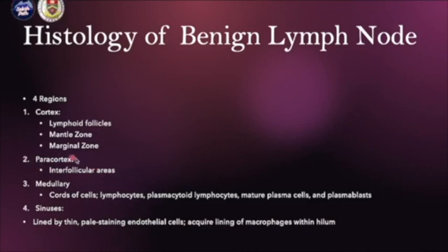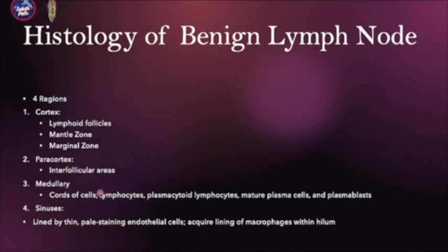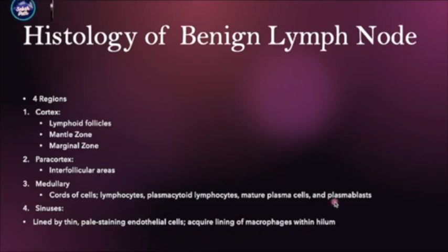For the paracortex, you usually have a lot of T-cells and plasma cells in between, so infection can affect this area more, and T-cell lymphoma may affect this area more. And for the sinuses, you can see the early phase of metastasis because of the endothelial cells.